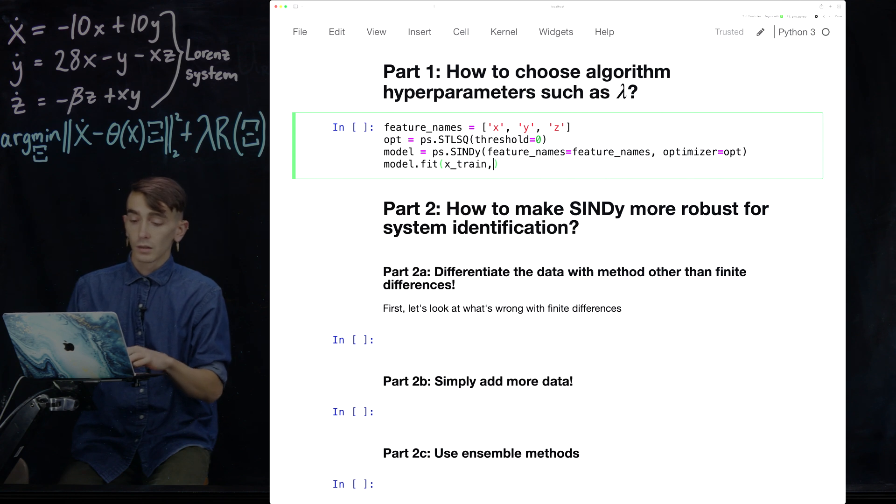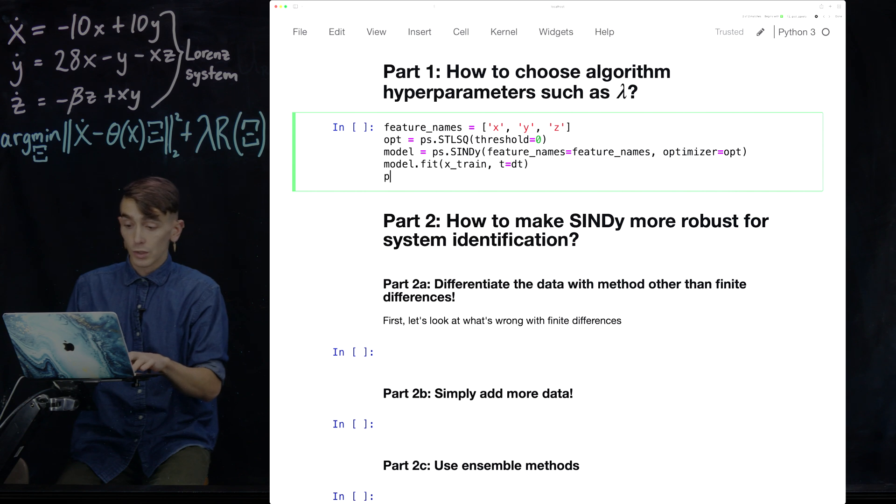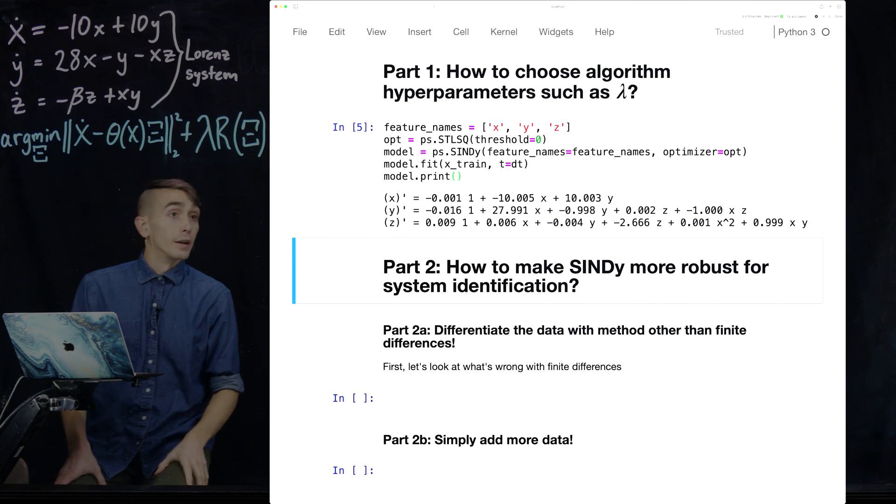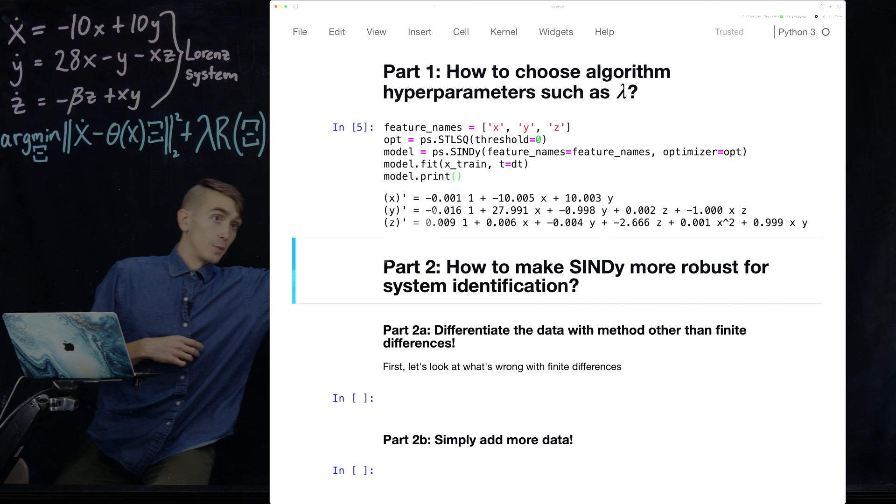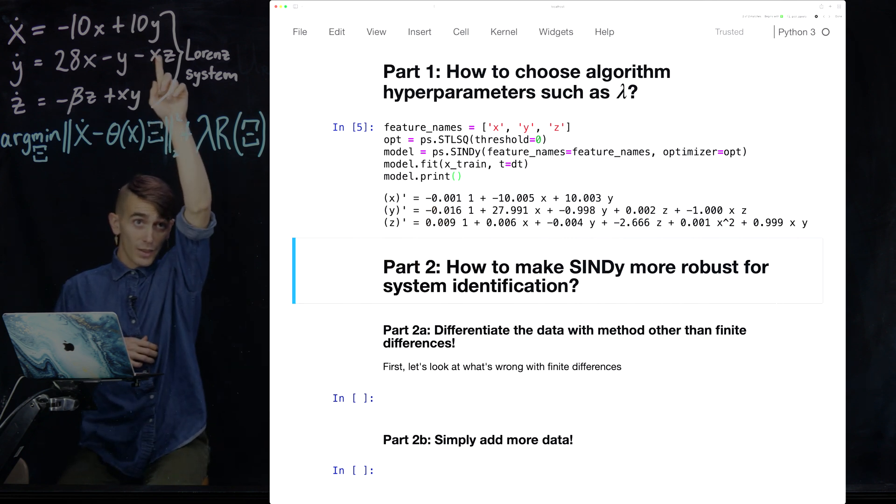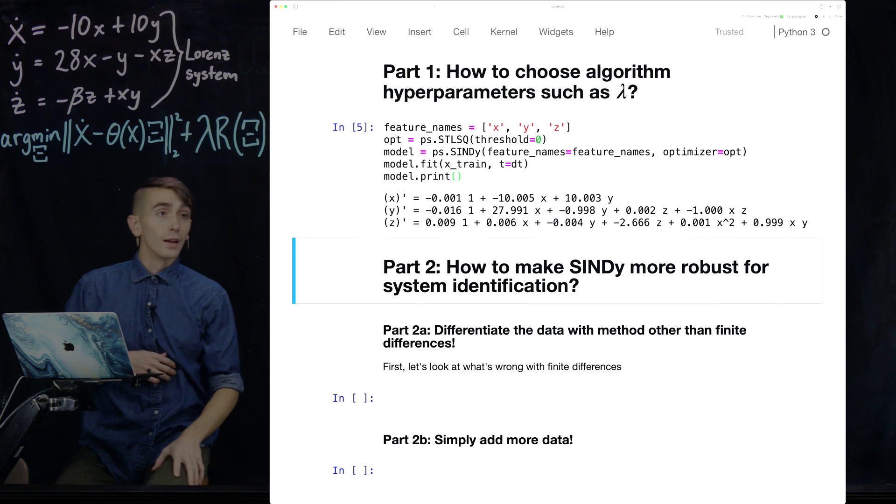To do that, we need to do model.fit, X train. So I've already loaded in some training Lorenz data. And I also need to tell it what the time step is between the data points. So that'll fit the model. And then we just do model.print. And that should tell us how it did. And you can see already, it basically captures the correct model. So it gets about minus 10 on that X term, gets about 10 on that Y term, and so forth.